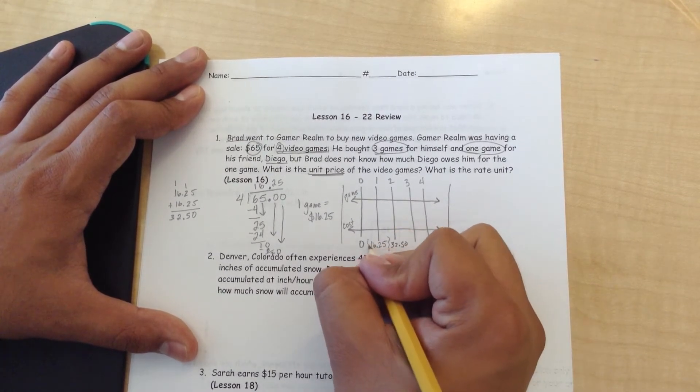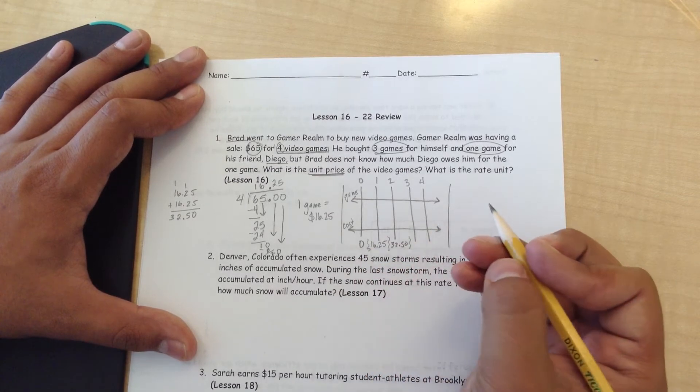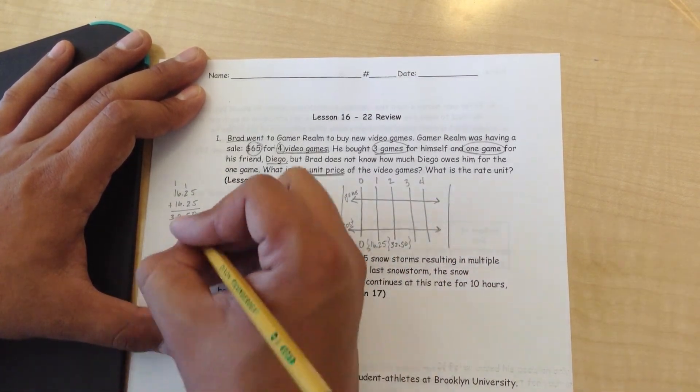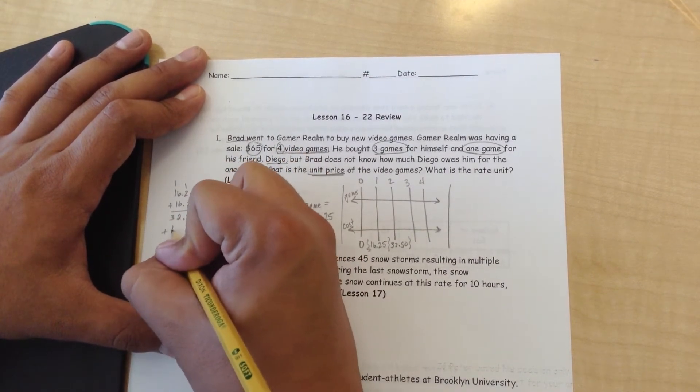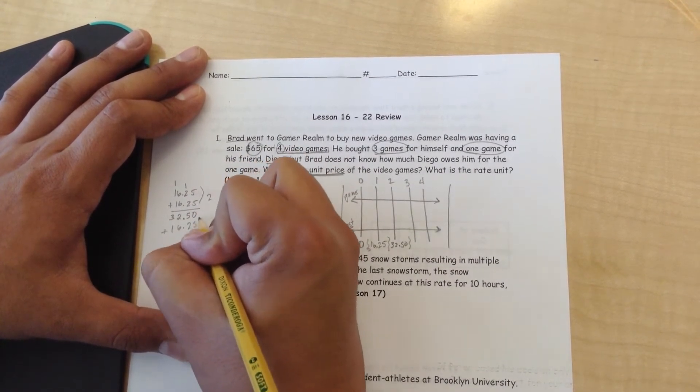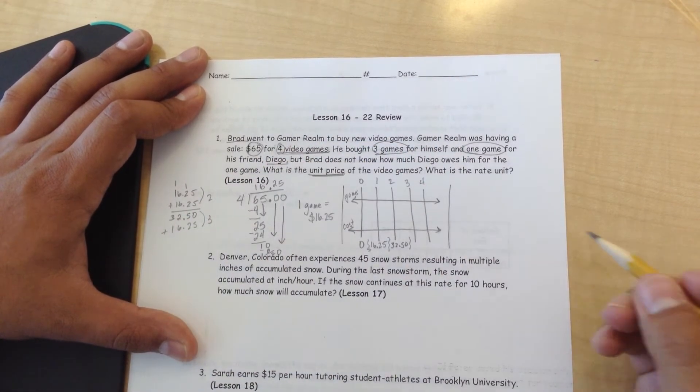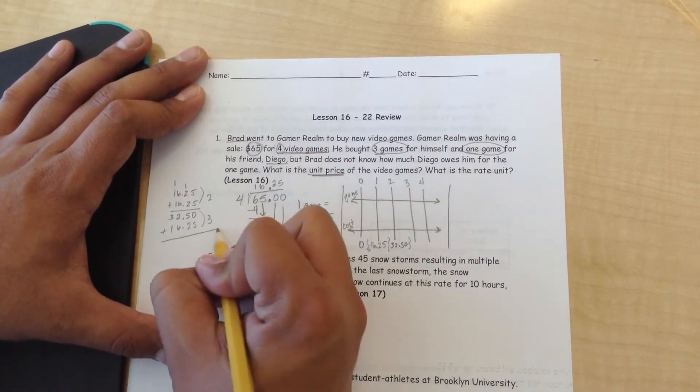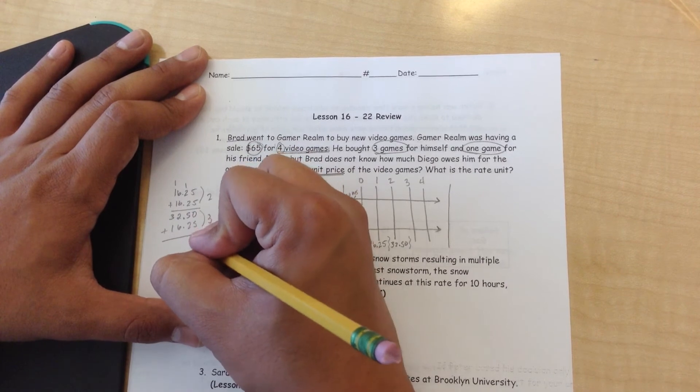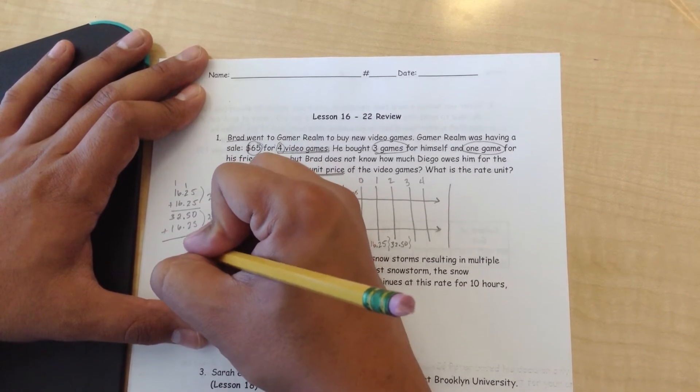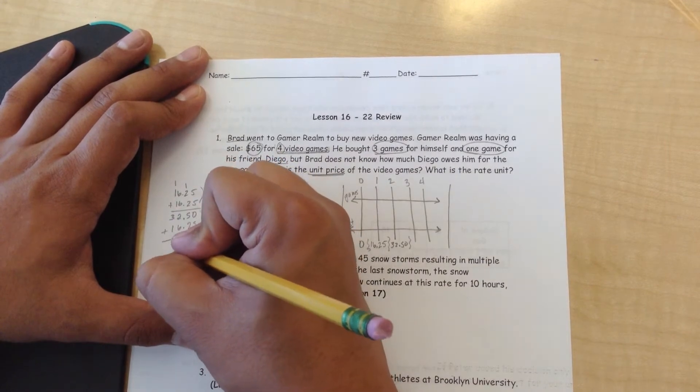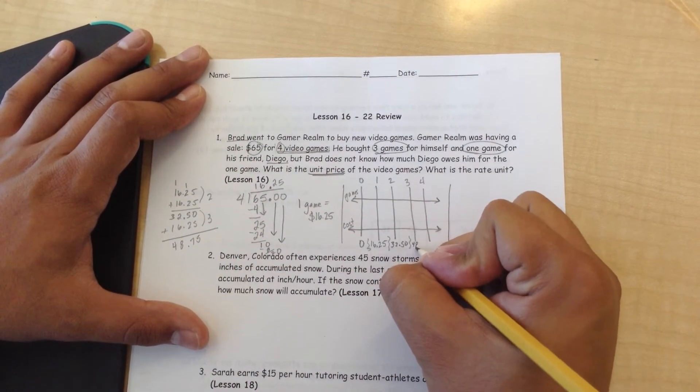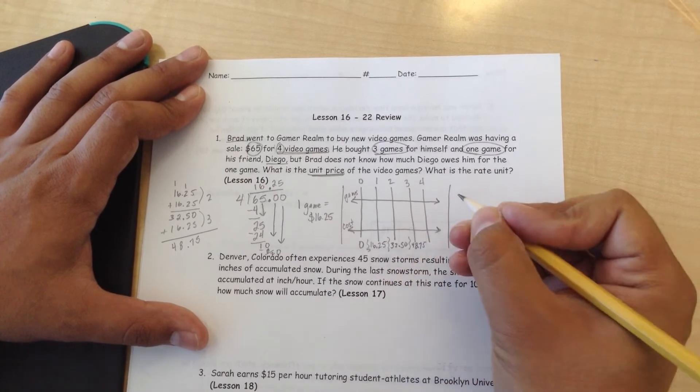I'm just going to do these little lines here to separate and know where it belongs. Three. So being that this is already two, I'm going to add, this is going to be the three part. This is the third part for three games. Zero plus five is five. Five plus two is seven. Two plus six is eight. Three plus one is four. $48.75.